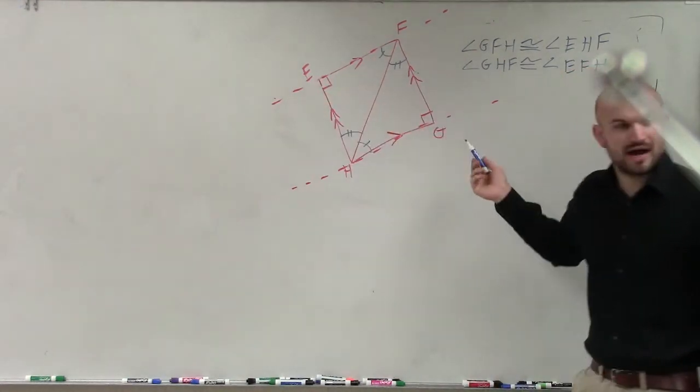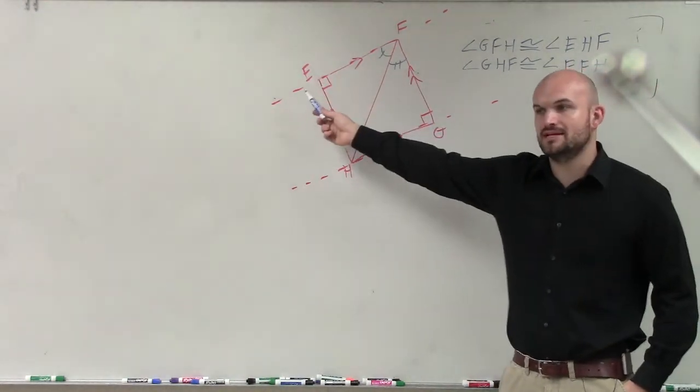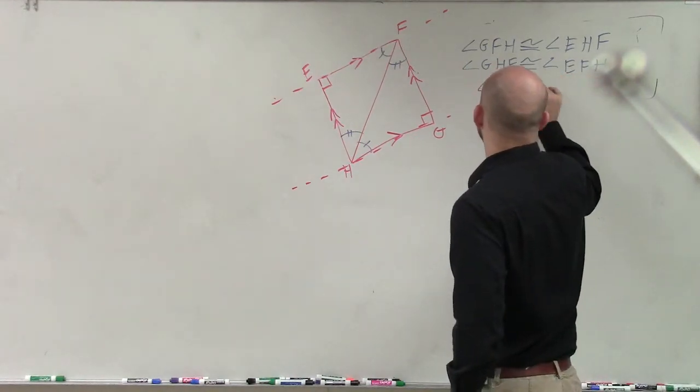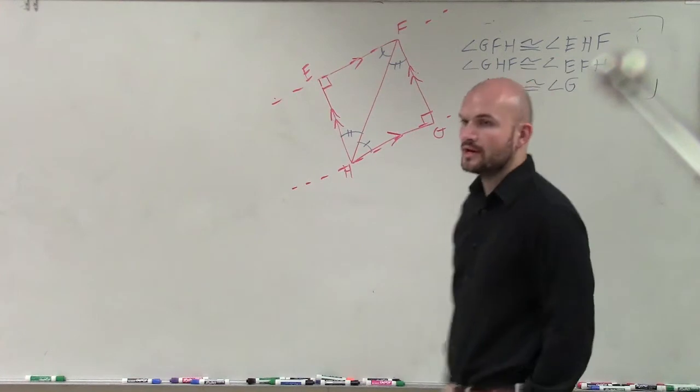Now, for these two, since these two angles are obviously not sharing any points, I can just also say angle E is congruent to angle G. All right?